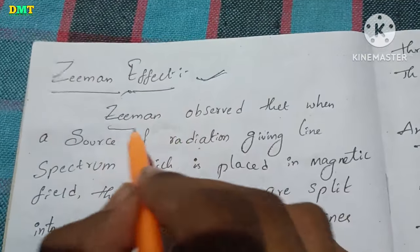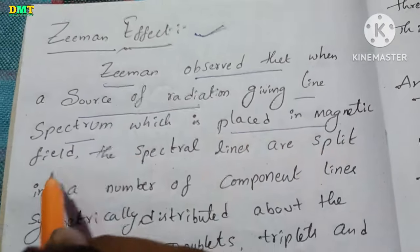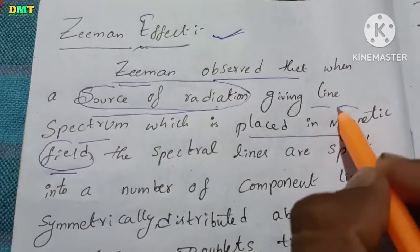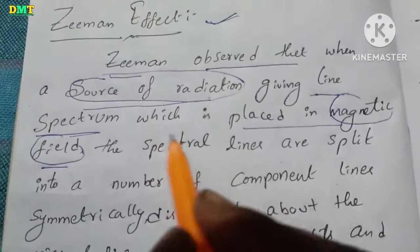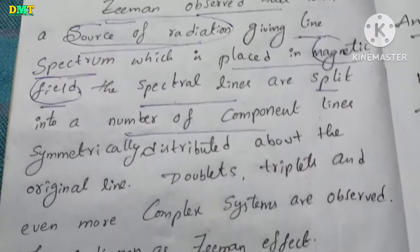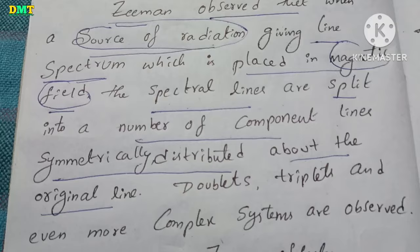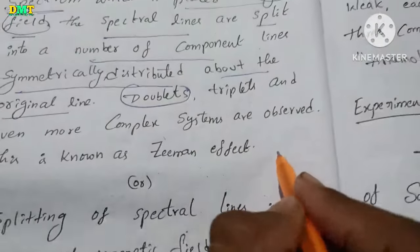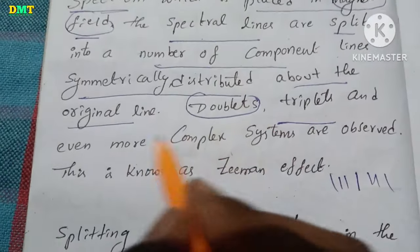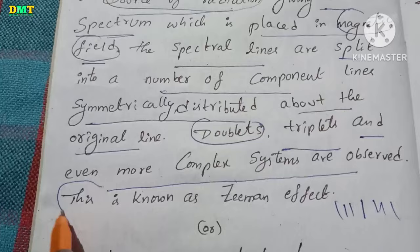Zeeman first observed that when a source of radiation giving a line spectrum is placed in a magnetic field, the spectral lines split into a number of components. Some components are symmetrically distributed about the original line. The component lines appear as doublets, triplets, and even more complex systems are observed.